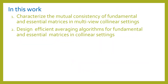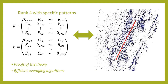In this paper, we introduced theoretical analysis and two algorithms for averaging essential or fundamental matrices in collinear scenarios. The first algorithm, based on our theoretical analysis, uses rank-constrained minimization to recover camera matrices in fully collinear settings.